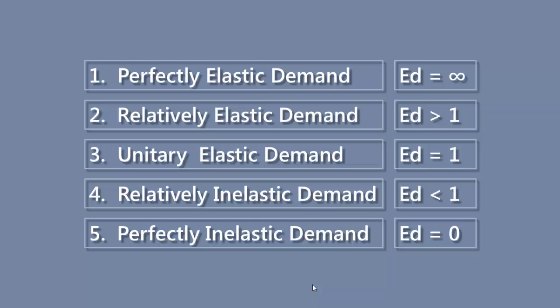Thus, we have five types of elasticity of demand. Next, we shall try to define the different kinds of elasticities. In doing so, I will compare percentage change in quantity demanded with percentage change in price. For the time being, you need not bother about the calculation of percentage change — it will be discussed under the methods of measuring elasticity of demand. You just try to understand the definitions.